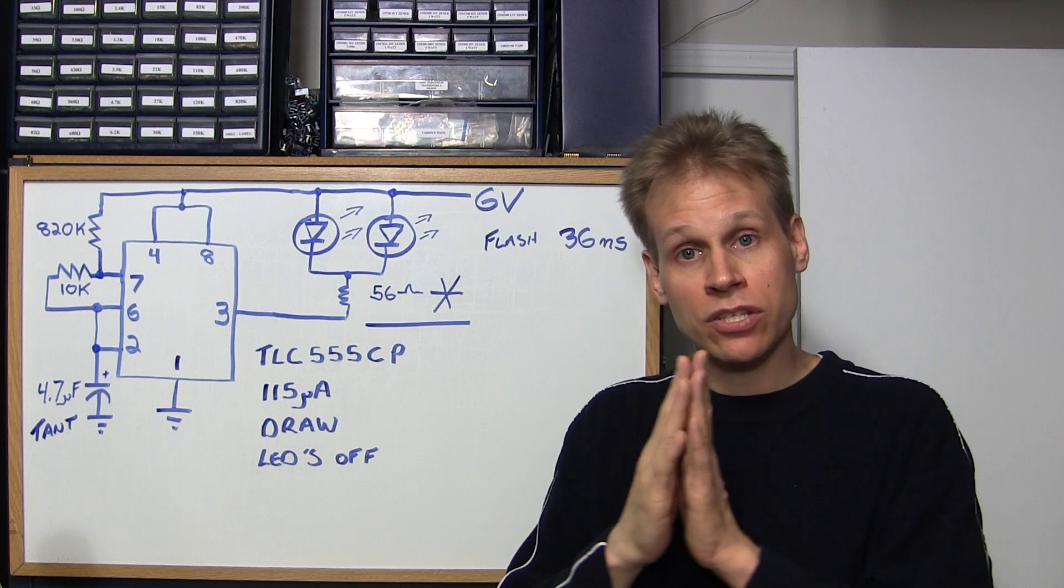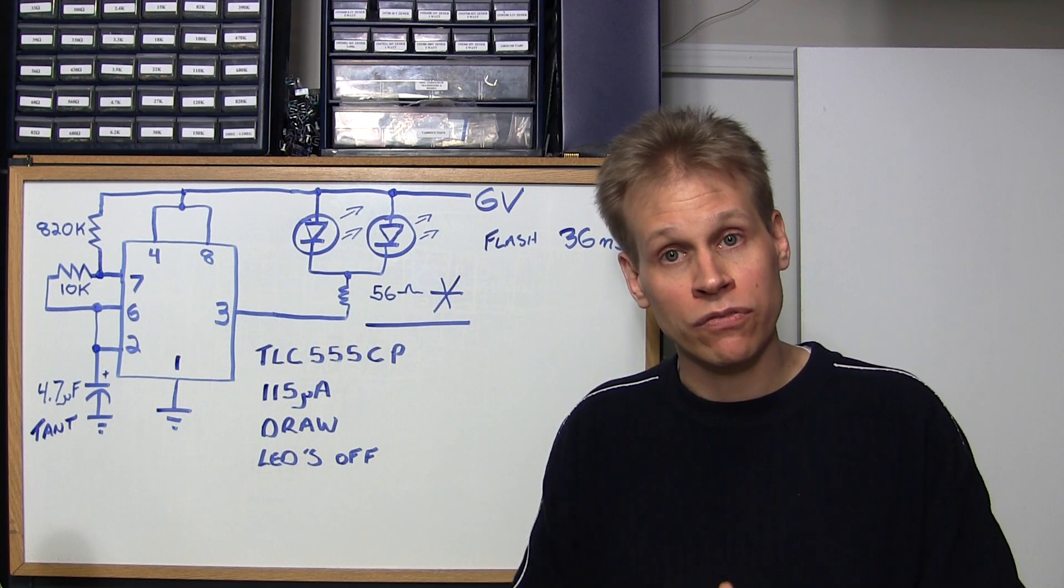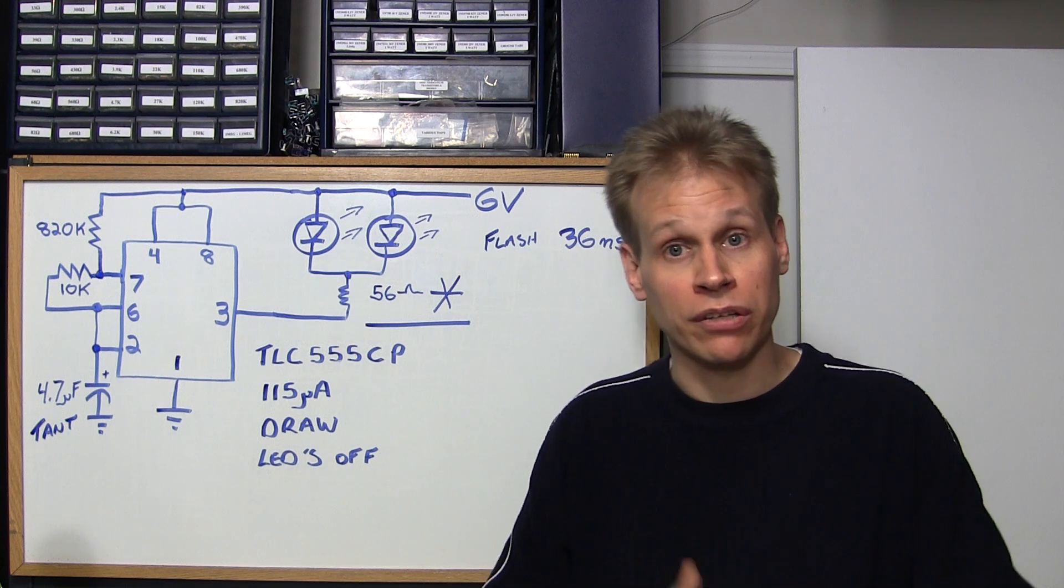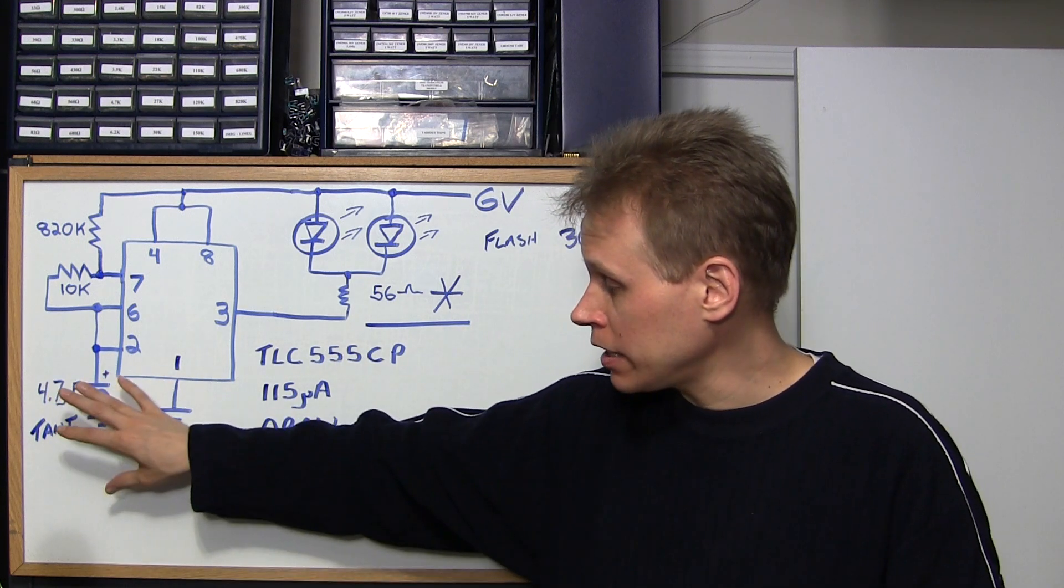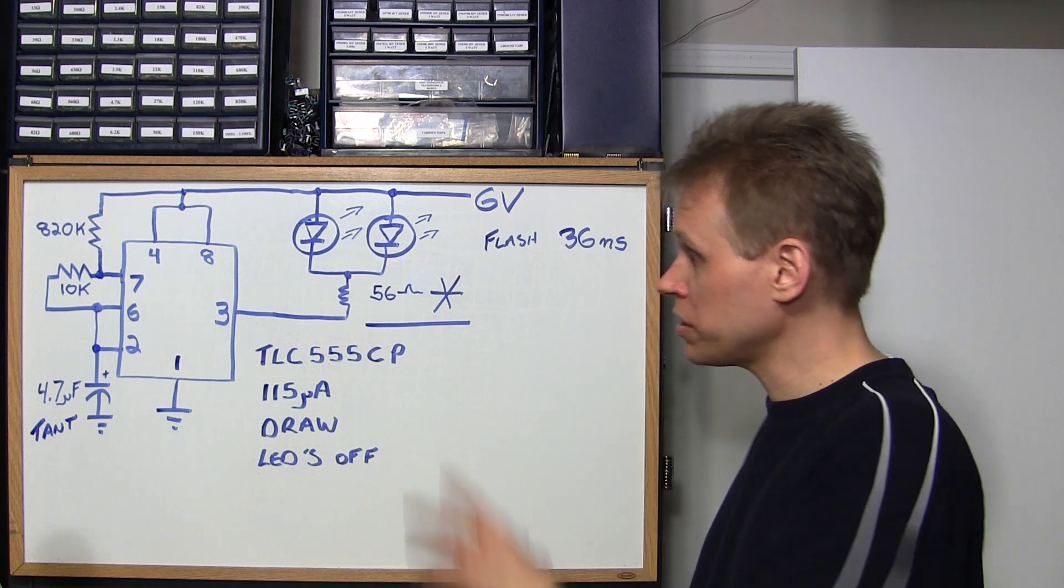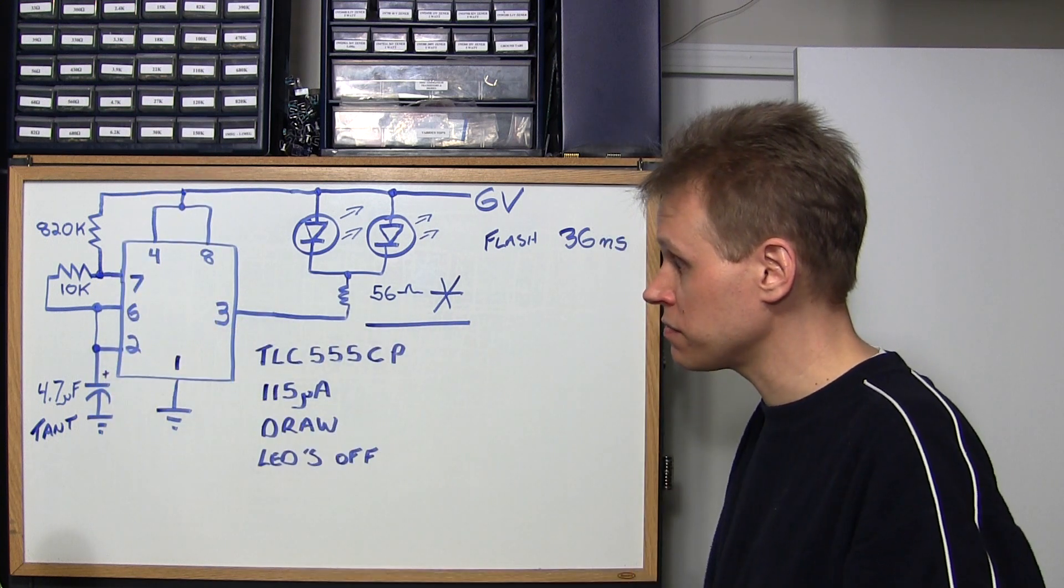So again this just sets the actual length of how long the LED is on for or the actual length of the particular flash. The 4.7 microfarad tantalum capacitor is also very important in this circuit with these values because this would all change if we change that capacitance value.